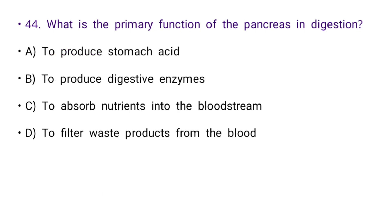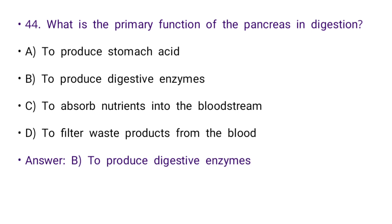Next: What is the primary function of the pancreas in digestion? Options: to produce stomach acid, to produce digestive enzymes, to absorb nutrients into the bloodstream, or to filter waste products from the blood. The right answer is B: to produce digestive enzymes.